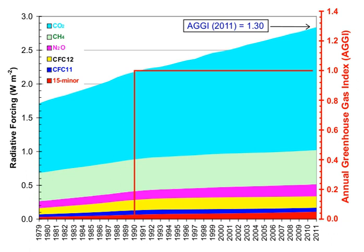Greenhouse gases can be removed from the atmosphere by various processes, including physical changes such as condensation and precipitation removing water vapor, chemical reactions within the atmosphere such as methane being oxidized by reaction with hydroxyl radical and degraded to CO2 and water vapor, and other chemical reactions including solution and solid phase chemistry occurring in atmospheric aerosols.